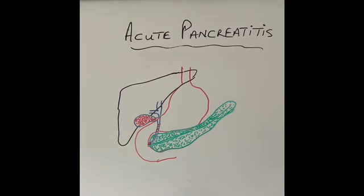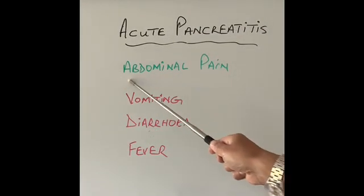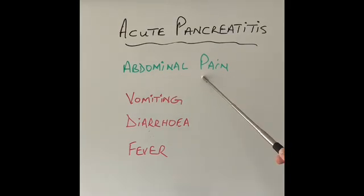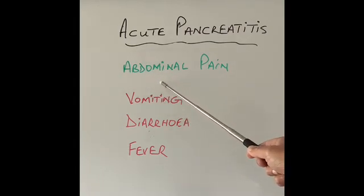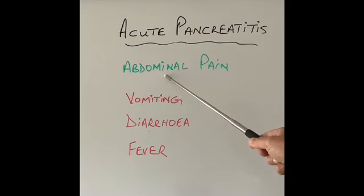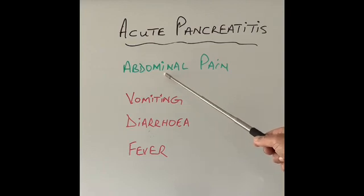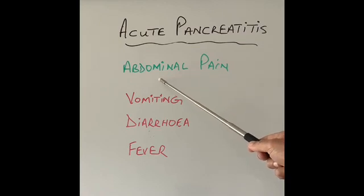Now let's talk about the symptoms of acute pancreatitis — how it presents. The most important symptom is abdominal pain. This is a very typical, very sharp pain in the middle of the tummy, right above the belly button, and the pain radiates through to the patient's back, so they often complain more of back pain around the mid-spine.